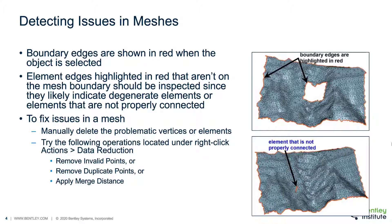In order for the user to fix issues in the mesh, they must manually delete problematic vertices or elements and use one of the mesh fixing functions. Such functions are found under the Actions > Data Reduction functions as Remove Overlap Points, Remove Duplicate Points, or Apply Merge Distance.